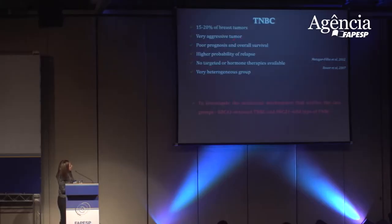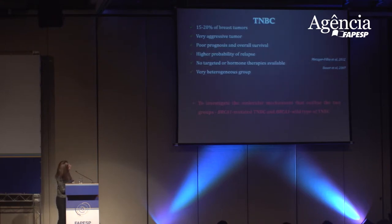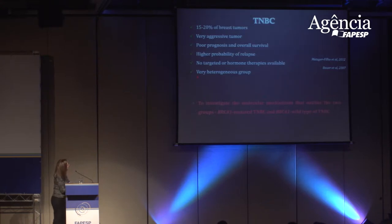This is very important because there are many implications for the women and for their families. Triple negative corresponds to 15 to 20% of all breast cancers. It is a very aggressive tumor with poor prognosis and overall survival, higher probability of relapse preferentially in solid tissue, and there are no targeted or hormone therapies available. Women are submitted to systemic chemotherapy, and the group is very heterogeneous regarding response to chemotherapy treatment.